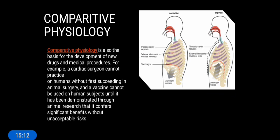For example, in respiration: someone takes in oxygen (inspiration) and exhales it (expiration). How the thoracic cavity, intercostal muscles, and diaphragm relax and contract — how the lungs take in oxygen, how the alveoli filter dust and particles and give proper oxygen to the blood — that is function, and the structure includes the diaphragm, thoracic cavity, and intercostal muscles. When you compare physiology results across species, it becomes comparative physiology.